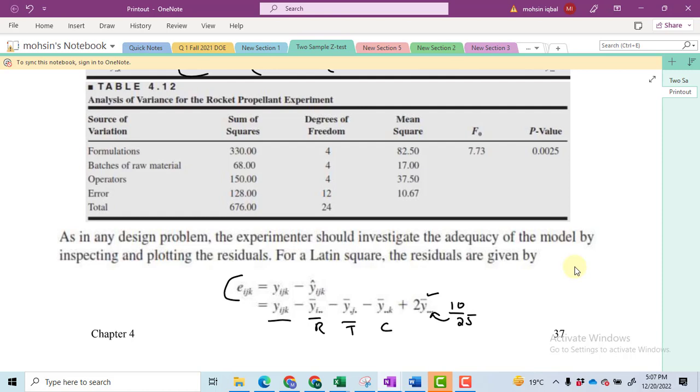Take the average of the treatment sums and also take the averages of column sums. So by doing all this for each observation, keep in mind you have 25 observations in this question. So there will be 25 residual terms and these 25 residual terms will help you in calculating the mean square of the error and then this mean square error you can call it pooled standard deviation or variance of the model.